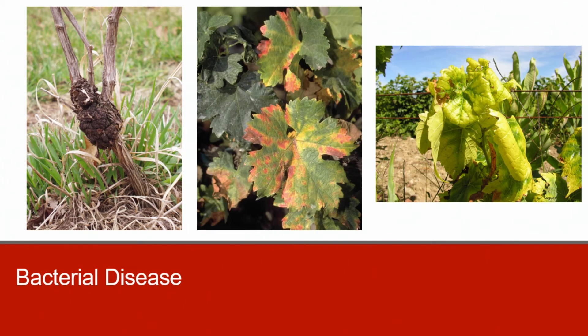For bacterial diseases, crown gall, caused by the soil-borne bacterium Agrobacterium, is the most invasive bacterial disease of grapes across the country. The first image here shows a picture of crown gall. Pierce's disease, caused by Xylella fastidiosa and shown in the second image, is a deadly disease of grapevines, but for the most part is restricted to areas with a subtropical climate, with the greatest distribution and disease severity occurring in Florida and California. However, with changing weather patterns in the Midwest, the threat of this disease in Ohio and surrounding states is growing.